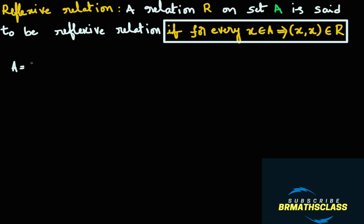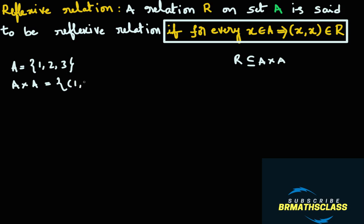I will take set A equal to {1, 2, 3}. First of all, R must be a relation on A. What is a relation on A? If R is a subset of A cross A, then R is called a relation on A. So I will write what A cross A is. By this time, you are very familiar with how to write A cross A. You take the first element in set A and pair it with all elements of set A. So A cross A contains ordered pairs (1,1), (1,2), (1,3).